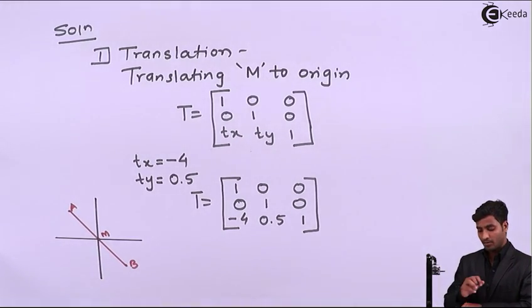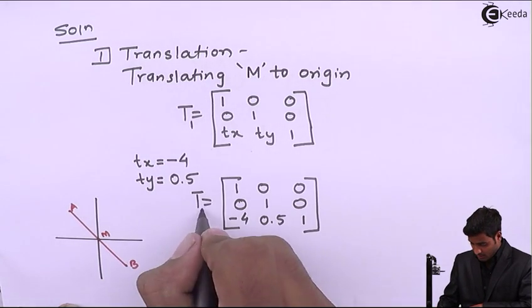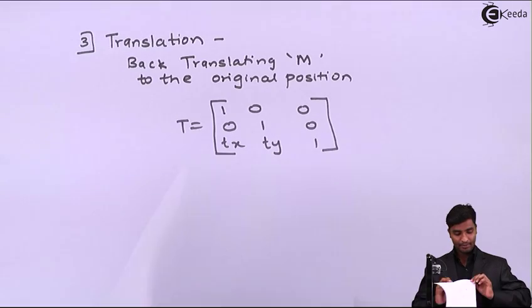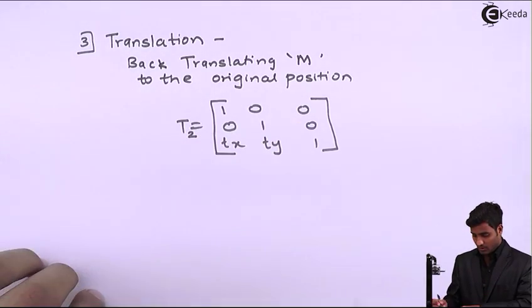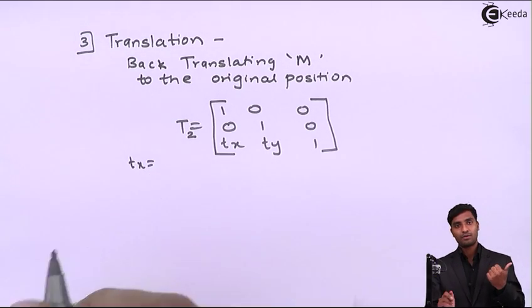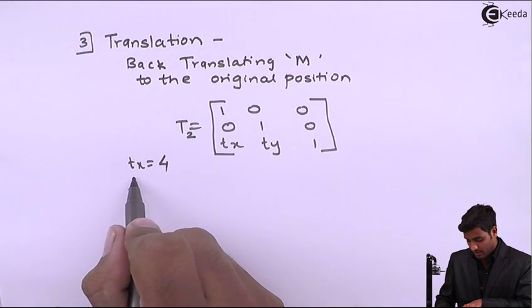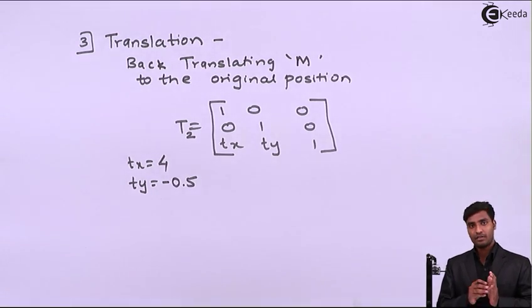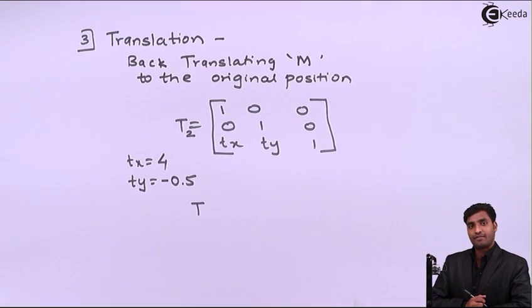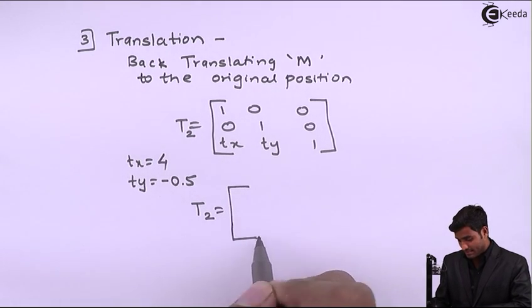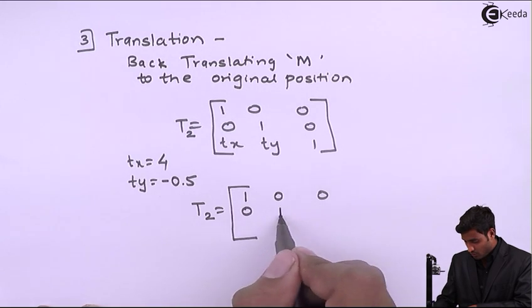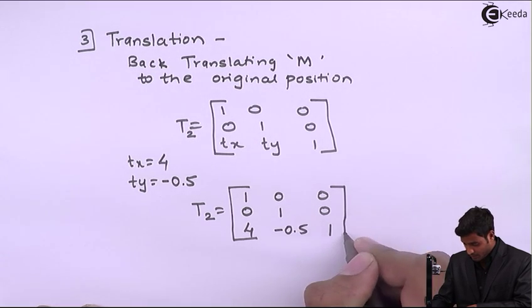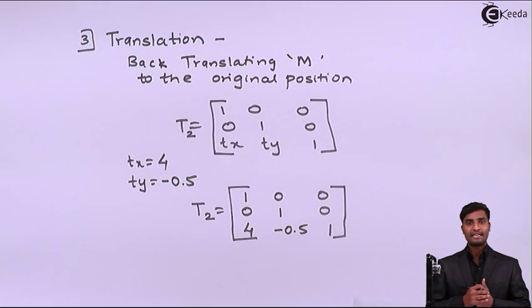Since we are doing two translations, I will represent the first as T1 and the back translation as T2. For T2, tx = +4 (opposite of T1's -4) and ty = -0.5 (opposite of T1's +0.5). After replacing these values, T2 = [[1,0,0],[0,1,0],[4,-0.5,1]].